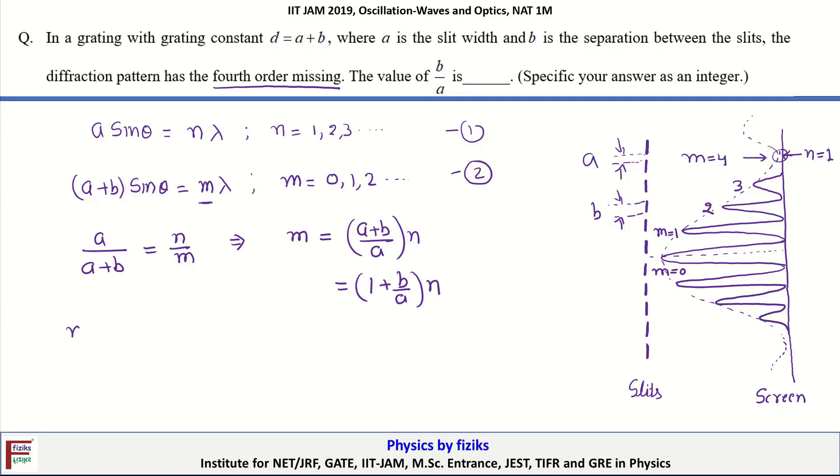In this question, it is already mentioned that m equal to 4, that is the fourth interference maxima is missing. This missing order lies at the first minima of the diffraction, so n will be equal to 1.